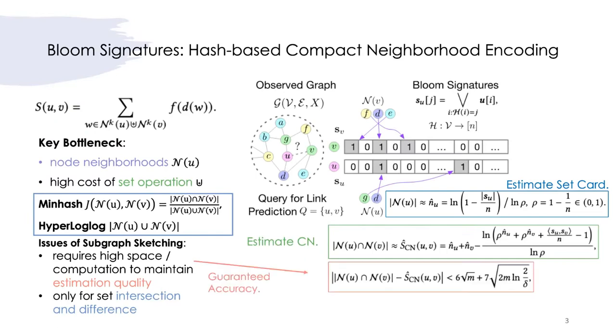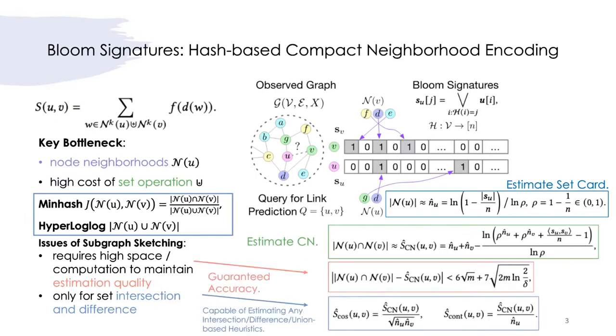More importantly, we demonstrate that, by combining with MLP, bloom signatures are capable of estimating any intersection difference union-based heuristics with provable guarantees.